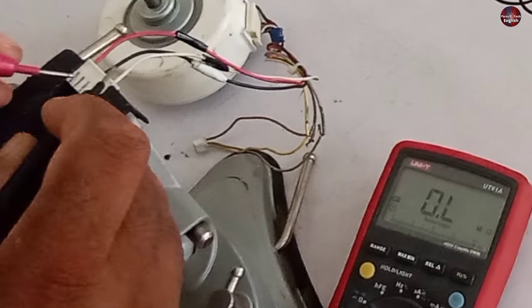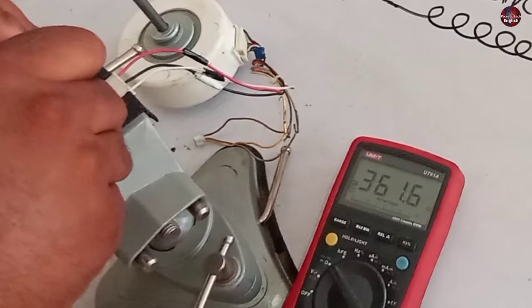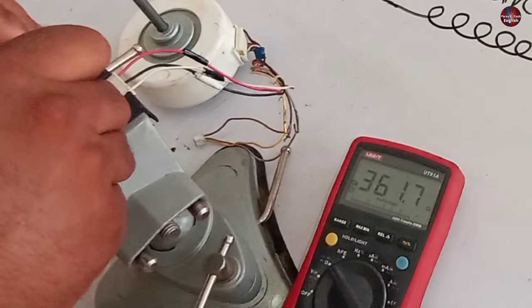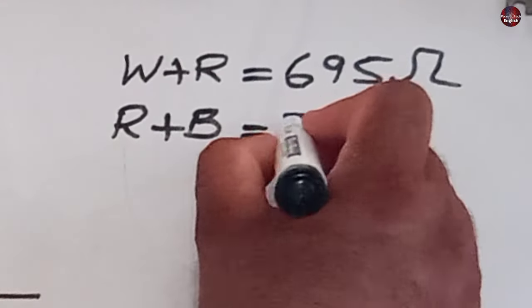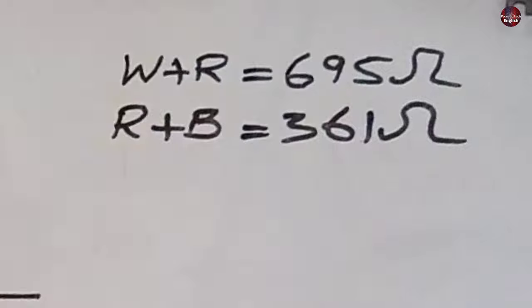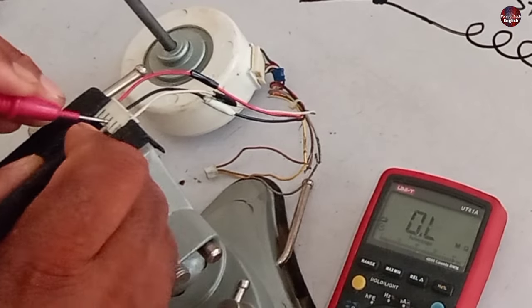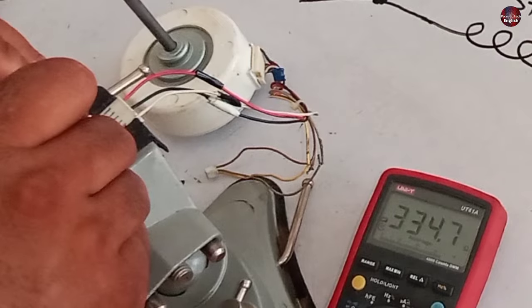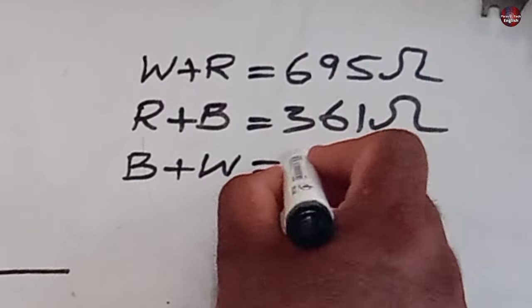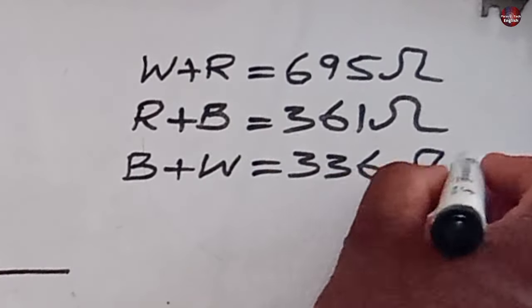Next, I am checking the value between the black and red. It shows 361 ohms. Now I will write it, that the red and black wire is showing 361 ohms. Now I will check the value between black and white. It is showing 334 ohms. I have written the black and white wire value as 336 ohms.